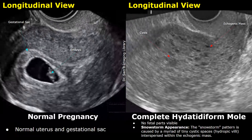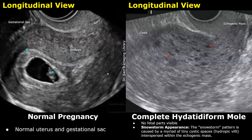We will compare the appearance of a normal pregnancy with a complete molar pregnancy. These are transvaginal images in the longitudinal plane. In the image on the left, we have a normal gestational sac with a normal embryo and a normal uterus. In the image on the right, we have a complete hydatidiform mole — no embryo or fetal parts are visible. Instead, we see an echogenic mass in the uterine cavity with multiple cysts.